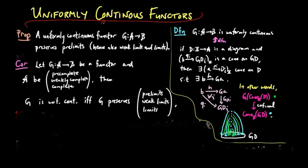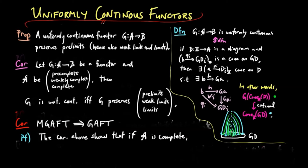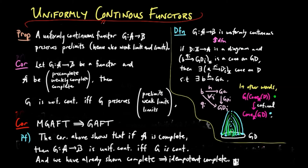So finally, we can prove that the more general adjoint functor theorem implies the general adjoint functor theorem. We have the corollary above showing that if A is complete, then G is uniformly continuous if and only if G is continuous. And we have already shown that completeness implies idempotent completeness. And that finishes the proof, and this ends the section.